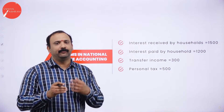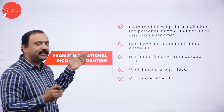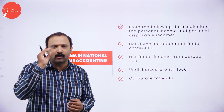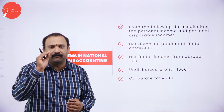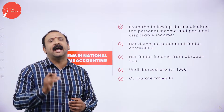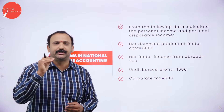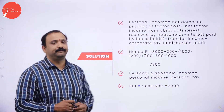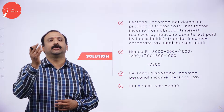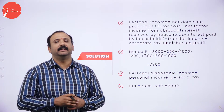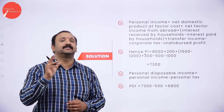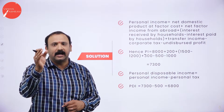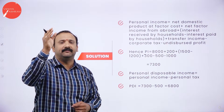If you go through the problem, you would see that the factors are already given to you — you don't have to search for the numbers. All you have to do is fit in the formula and you will get the answer automatically. The personal income formula equals net domestic product at factor cost plus net factor income from abroad, plus interest received minus interest paid by the household, plus transfer income, minus corporate tax, minus undisbursed profit.